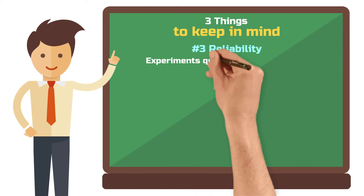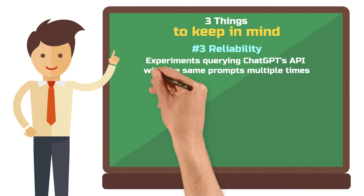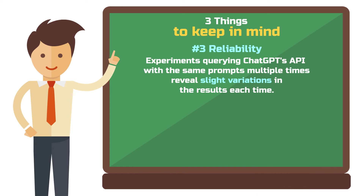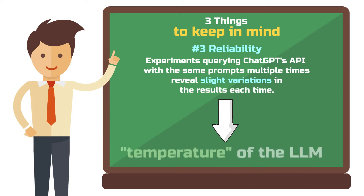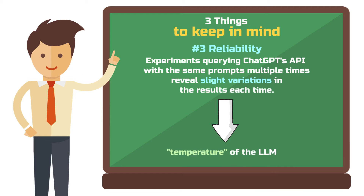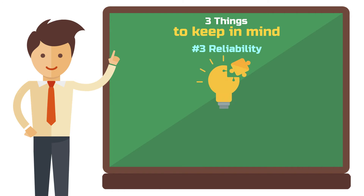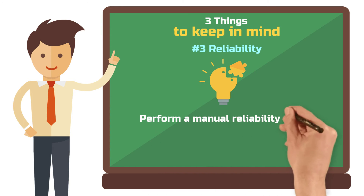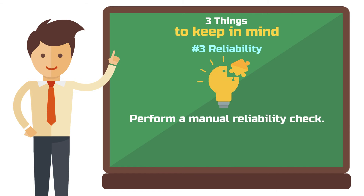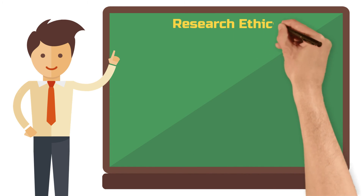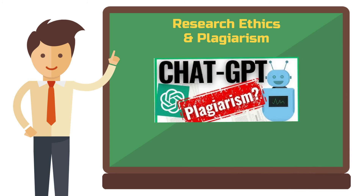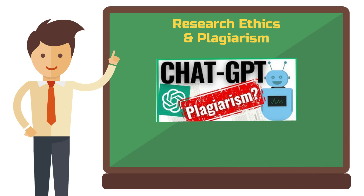Third limitation: reliability. Experiments querying the ChatGPT API with the same prompts multiple times show that results are slightly different each time — this is known as the temperature of the large language model. The higher the temperature, the more varied the results. As an average user you rely on default settings where temperature is not too high. However, you can and should perform a manual reliability check, just as you would when coding with another person. For information on research ethics and plagiarism, check out the linked ChatGPT plagiarism video.